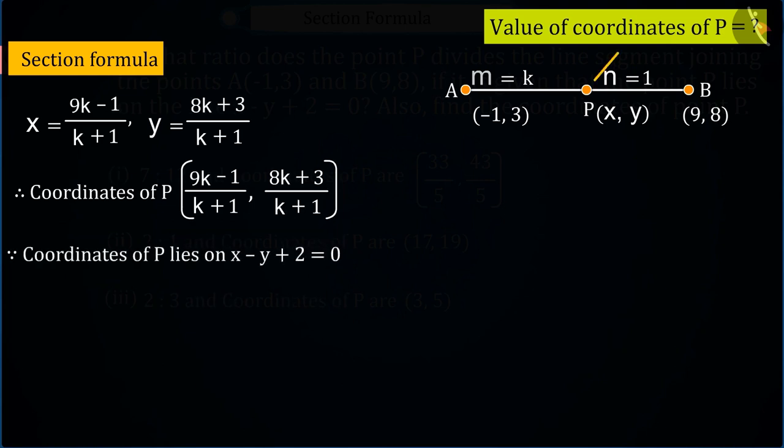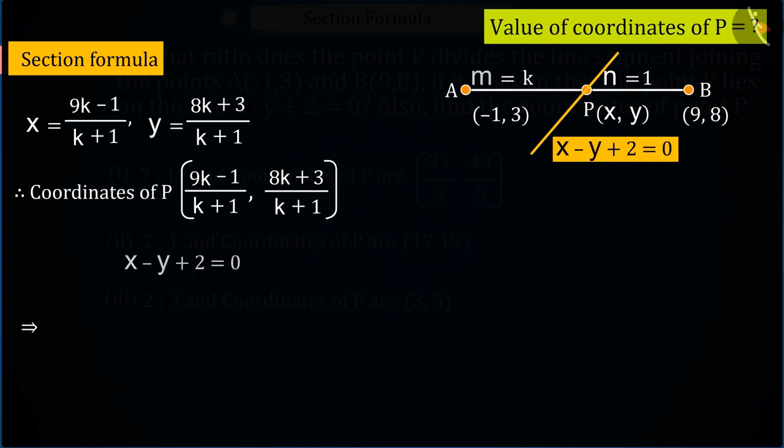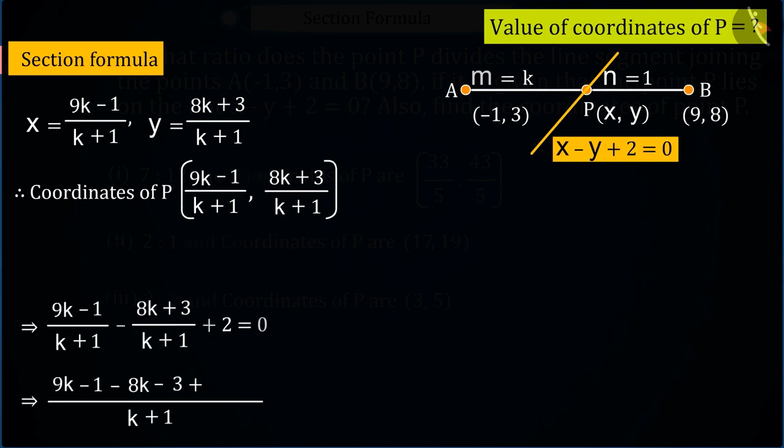Since the point P lies on the line x - y + 2 = 0, so by putting the values of x and y in this equation,